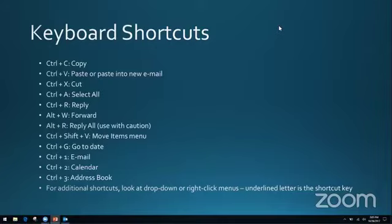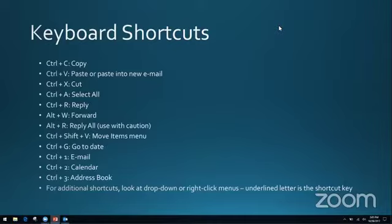A couple of other shortcuts unique to Outlook: to automatically reply to a selected email, use Control+R. Alt+W is to forward an email. Alt+R is to reply all — use with caution. A lot of people do not need to reply all all the time, and you can get yourself into a little bit of trouble replying all to things that maybe you should not be passing along to everybody. Control+R for reply is probably the better choice, unless you know for sure that everybody needs the information.